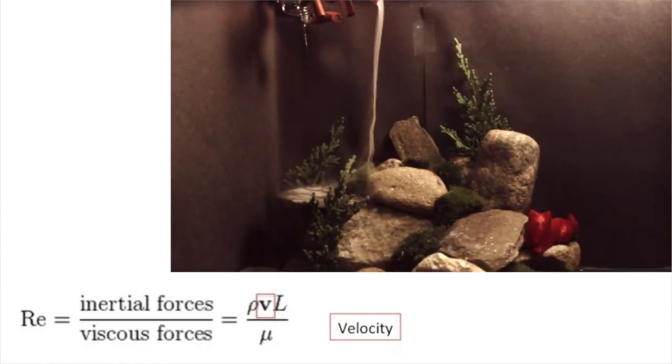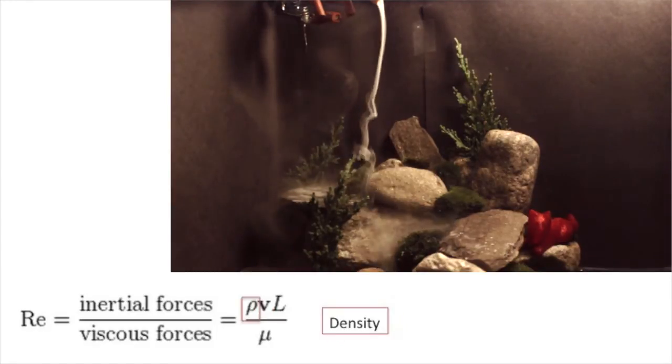This is because the Reynolds number increases with velocity. The Reynolds number also increases with density, but when smoke is less dense than air, it rises and the smokestream dissipates.